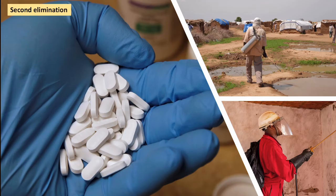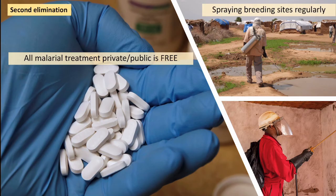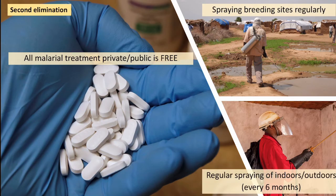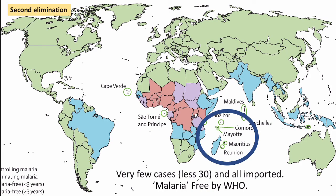Other strategies that are part of this wider second elimination effort include the fact that if you visit Mauritius and you do have malaria, all treatment — whether private or public — is actually free. They continue to regularly spray breeding sites and carry out residual indoor spraying of most buildings approximately every six months. This combined approach has been very, very successful. Looking at this world map showing countries that are malaria-free, Mauritius is considered malaria-free by the World Health Organization. If there are any cases, it's fewer than 30 and all would have been imported from other countries, so it's not indigenous to Mauritius anymore.